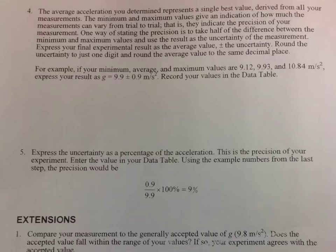And there is an example in the lab, but I'm going to go through again using my numbers. The average acceleration represents a single best value derived from all of your measurements. The minimum and maximum gives an indication of how much the measurements can vary from trial to trial. That is, they indicate the precision of your measurement. One way of stating the precision is to take half of the difference between the minimum and maximum values, and use the result as the uncertainty of the measurement.